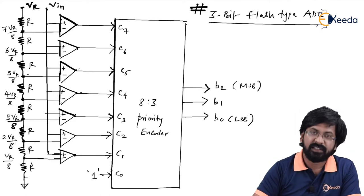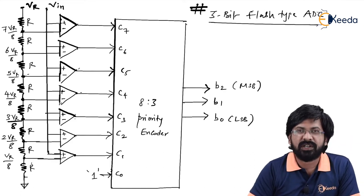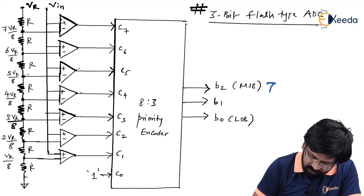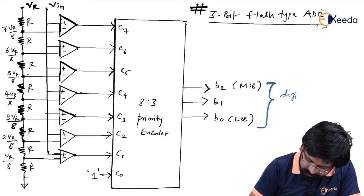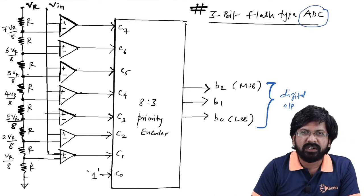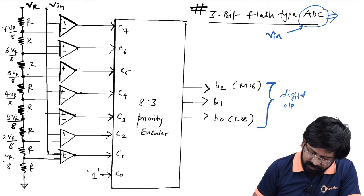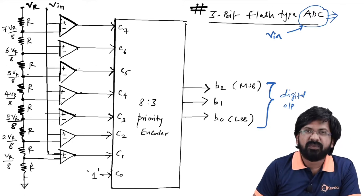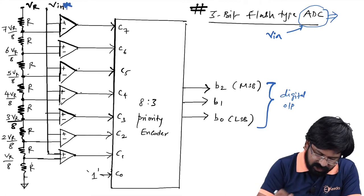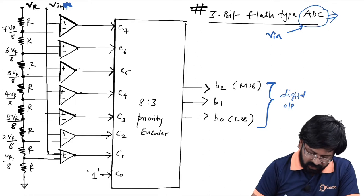It is called a 3-bit ADC because the output is 3-bit — that is, it is an analog to digital converter. The digital output is B0, B1, B2. Every ADC is a voltage-to-data converter: the input is Vin and the output is digital data B2, B1, B0. Vin is applied commonly to all comparators.